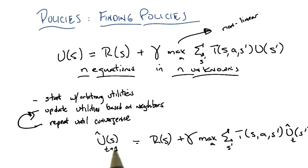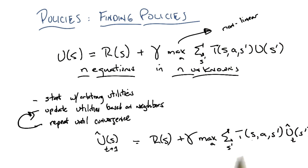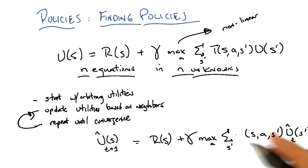I'm going to update the utility of s by looking at the utilities of all the other states, including itself and s prime, and weight those based on my probability of getting there given that I took an action. And what action am I going to take? I'm going to take the one that maximizes my expected utility — figuring out what to do in a state, assuming that u-hat really is the right answer for the future.